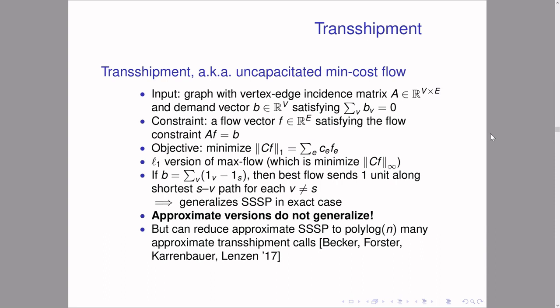However, a more complicated reduction can be done: we can reduce approximate SSSP to polylog-many calls of approximate transshipment. This direction has been studied by Becker, Forster, Karrenbauer, and Lenzen. We need to do a bit more work to get the full reduction for our setting, but we essentially adapt their techniques.